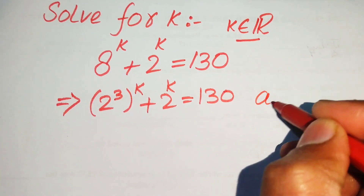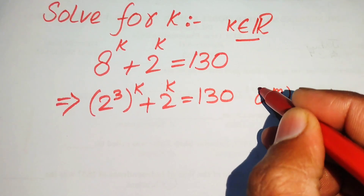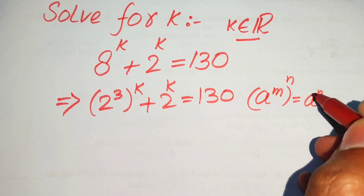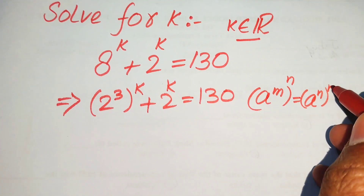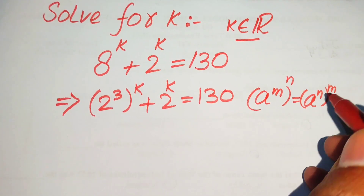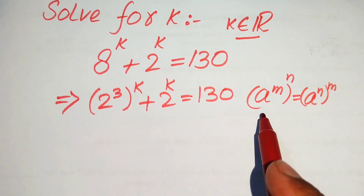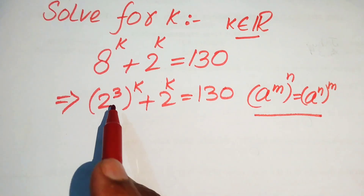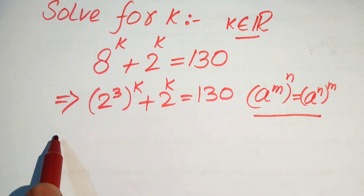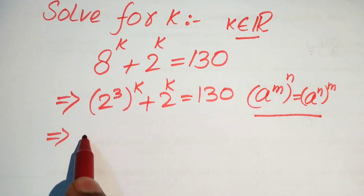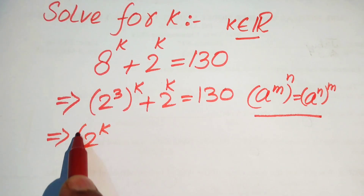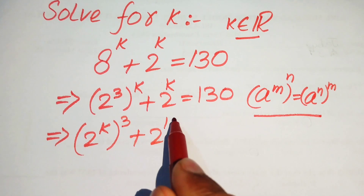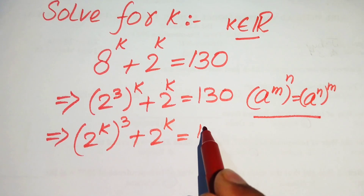Now in the next step, we use the nice exponential law. According to this law, we have a to the power of m to the power of n — we interchange these two exponents and write it as a to the power of n to the power of m, because after interchanging it always gives us the same answer. So here we interchange the two exponents, and it will be written as 2 to the power of 3k plus 2 to the power of k equals 130.